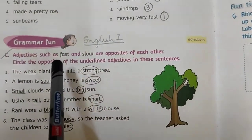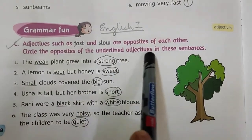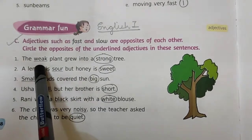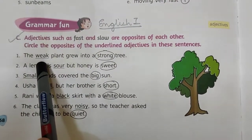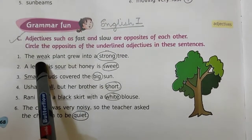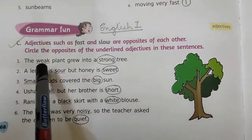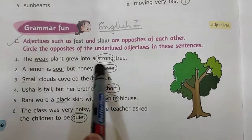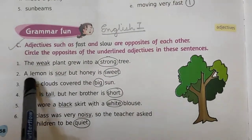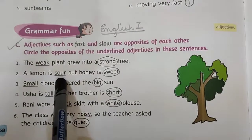Now let's do the grammar exercise. Circle the opposites of the underlined adjectives in these sentences. In each sentence, one word is underlined and we have to circle the opposite of that adjective. Number 1: the weak plant grew into a strong tree — it has already been done in your book — the opposite of weak is strong. Number 2: a lemon is sour but honey is sweet — the opposite of sour is sweet.